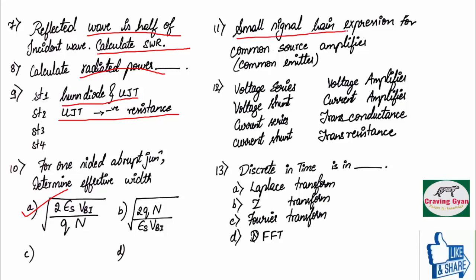Eleventh question was based on small signal gain expression for common emitter amplifier. We know common emitter or common source is going to produce a phase shift of 180 degree.